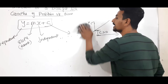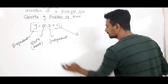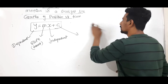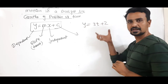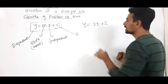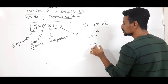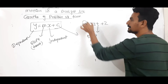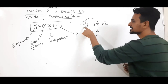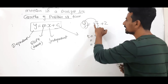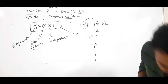What do dependent and independent quantities represent? Suppose I write y equals 3t plus 2. This is the equation of a straight line. Substituting t equals 0, 1, 2, and so on, y will change — that means y depends on t. So y is the dependent quantity, t is the independent quantity, 3 is the slope, and 2 is the intercept.